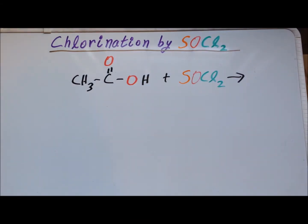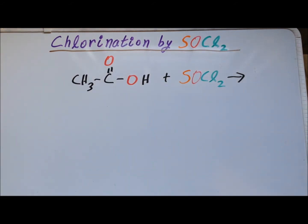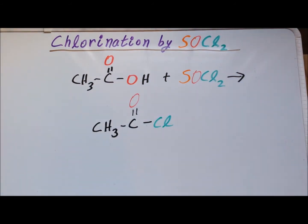In our second reaction, we react acetic acid with thionyl chloride with gentle heating. The product has this particular structure and we call the compound acetyl chloride. It is the acid chloride derivative of acetic acid.